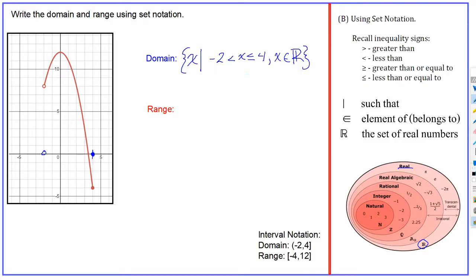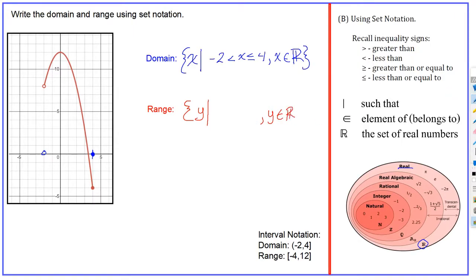For the range, we can fill in the template before looking at the graph. Once again, it needs a squiggly bracket and this time we're talking about y-values, so that changes. It's a set of y-values such that, then our inequality, then a comma and y is an element of the real number system. When would it not be an element of the real numbers? That would be if you have something like a stippled graph.